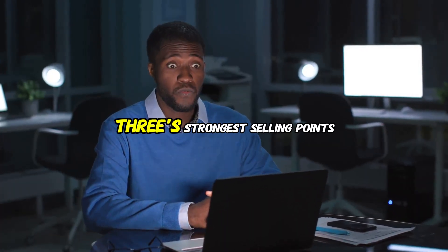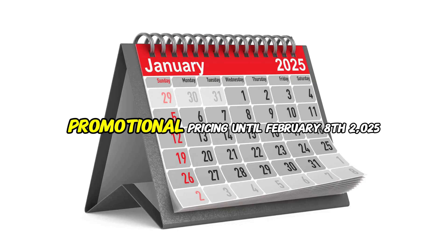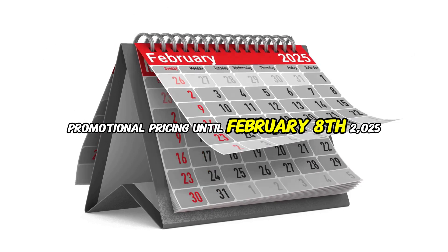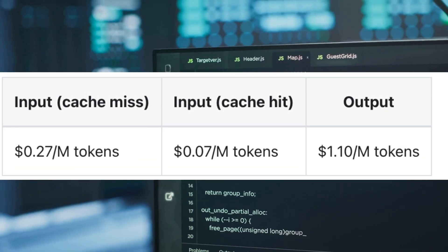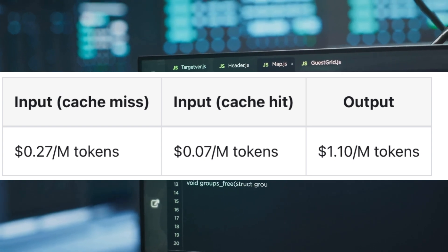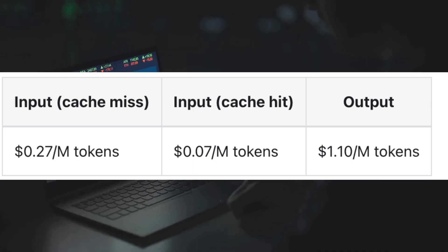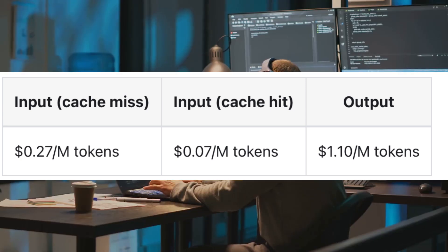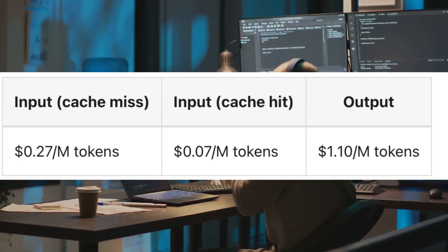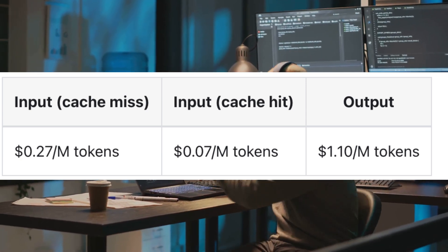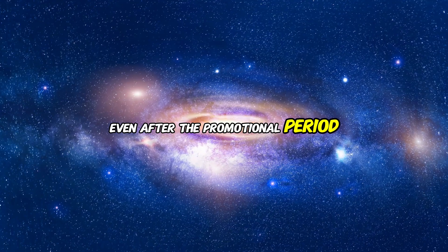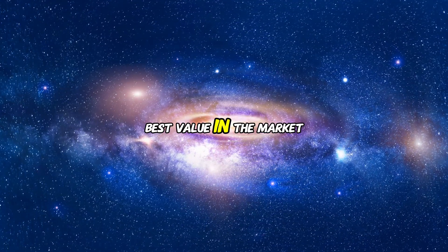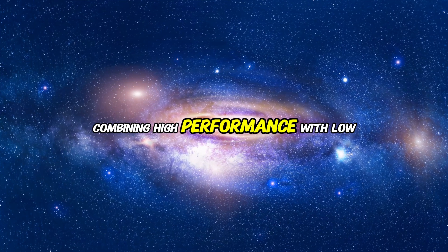Affordability is one of DeepSeek V3's strongest selling points. Promotional pricing until February 8, 2025: input (cache hit) $0.014 per million tokens, input (cache miss) $0.14 per million tokens, and output $0.28 per million tokens. Even after the promotional period, DeepSeek V3 remains the best value in the market, combining high performance with low costs.